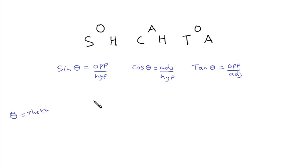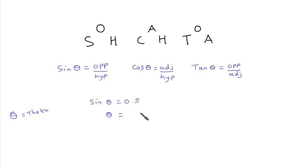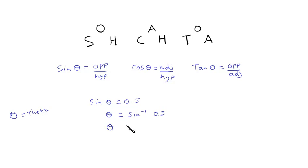Say we had that the sine of the angle was equal to 0.5. Sine and cosine of angles are always going to be decimals less than 1; the tangent could be more than 1, but it's still a small number. If we want to find the angle itself in degrees, we have to do something called the inverse sine, written as sine to the minus 1. The inverse sine just means the opposite of — or undoing — the sine operation. So we're finding the inverse sine of 0.5, because the sine of the angle is 0.5 and we're trying to do the opposite to find the angle itself. We need to use a calculator to do this.